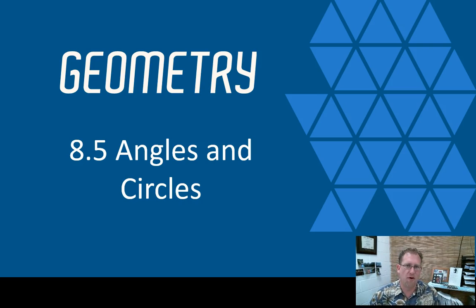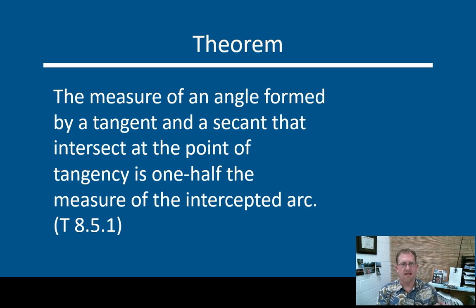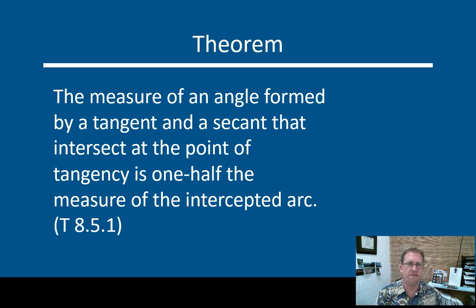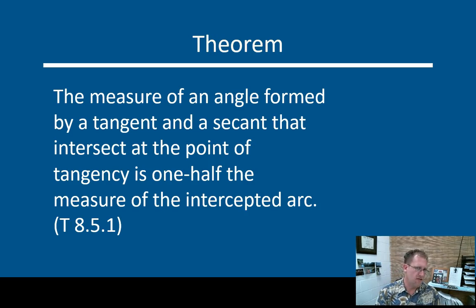We're going to jump into 8.5, angles and circles. We have studied a couple of different angles in circles in the last several lessons, and this one takes us outside of the circle, sort of. The measure of an angle formed by a tangent and a secant that intersect at the point of tangency is one half the measure of the intercepted arc.